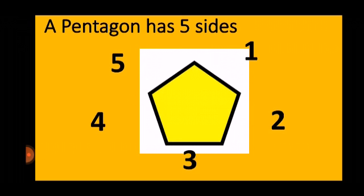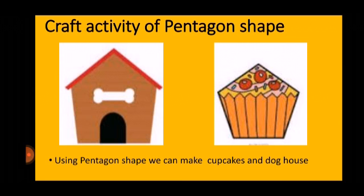Five sides. Let's count with me. The shape which has five sides is called a pentagon. One, two, three, four, five. A pentagon has five sides. So we have done one craft activity of pentagon shape. Using pentagon shape we...